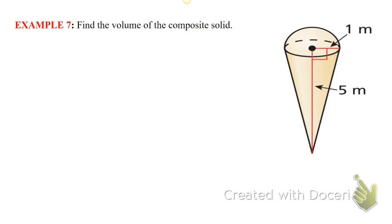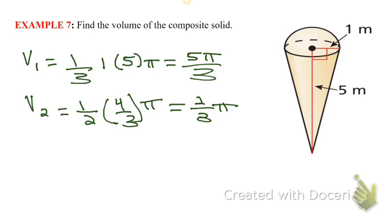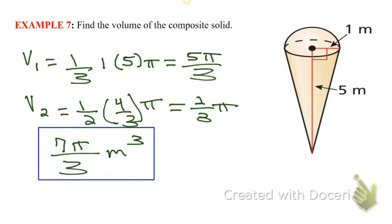Find the volume. First, find the volume of the cone, and then find the volume of the hemisphere, which is half the volume of a full sphere. The first volume is one-third times the base area — one squared times pi — times the height, which is five: that gives five pi over three. The second volume is one-half times four-thirds pi times one cubed, which is just one. Then add those together. This one was easy because squaring a one and cubing a one both equal one.